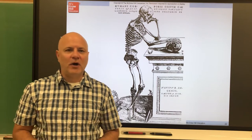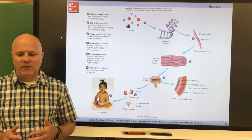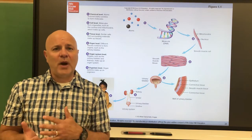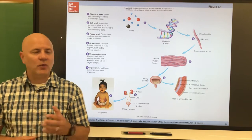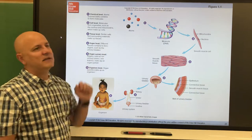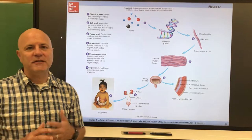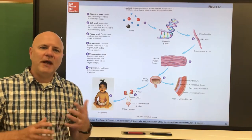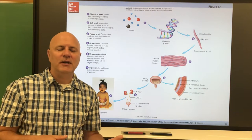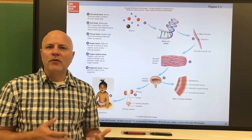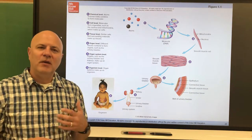Now let's move on to the levels of organization. We're primarily looking at the human organism in this class, starting with the smallest level: the atomic level. An atom is the smallest particle of an element that retains the properties of that element. Elements are basic chemical substances — oxygen, hydrogen, nitrogen are examples.